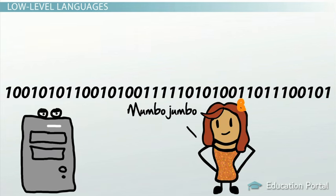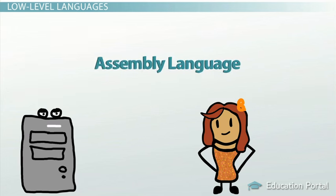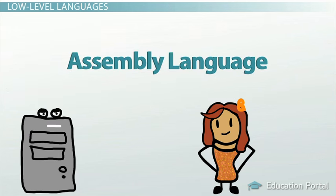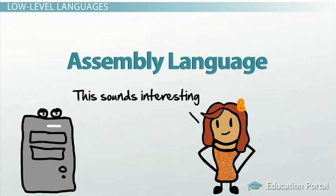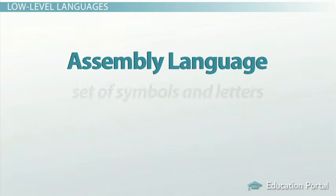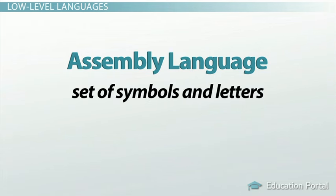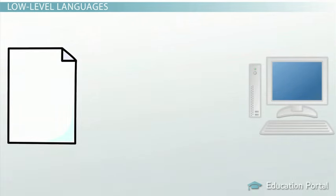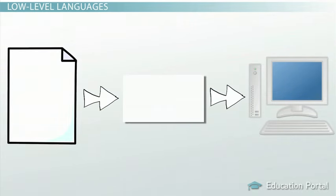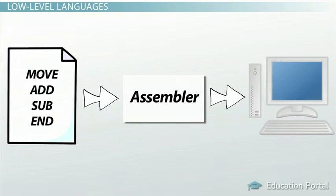This is where assembly languages come in. An assembly language is the first step to improve programming structure and make machine language more readable by humans. An assembly language consists of a set of symbols and letters. A translator is required to translate the assembly language to machine language — this translator program is called the assembler. It can be called the second generation language since it no longer uses ones and zeros, but terms like move, add, sub, and end.